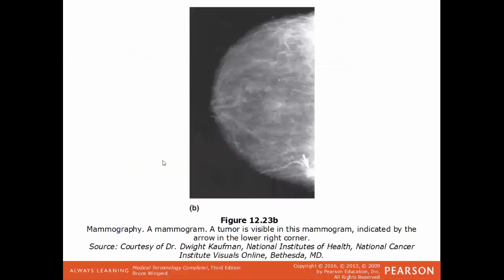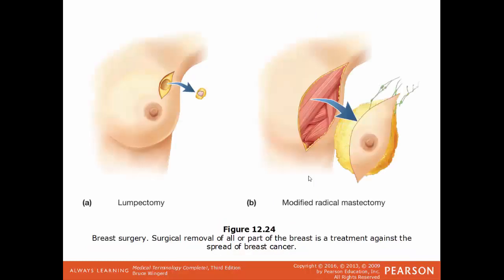This is how a mammogram would look. You can see right here where this arrow is — this collection of tissue would be a visible tumor. This image shows examples of a lumpectomy and a modified radical mastectomy. A lumpectomy: only taking out a lump of tissue where the cancer is found. A modified radical mastectomy: taking out the breast tissue and lymph nodes, but the underlying muscle — the pectoralis major — is spared.